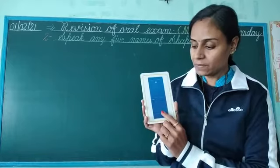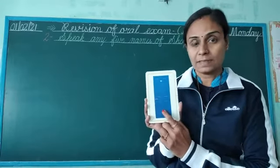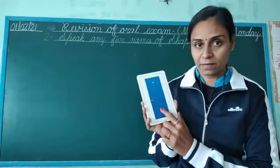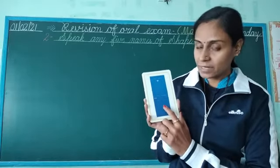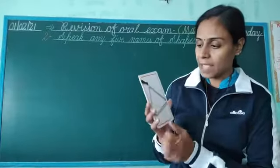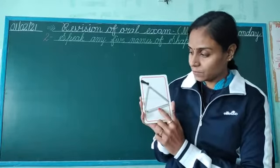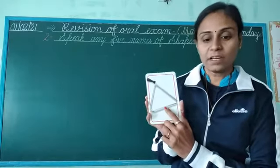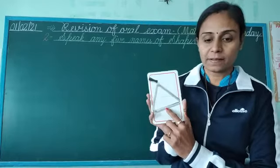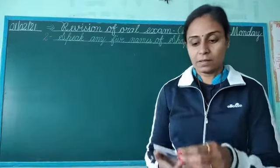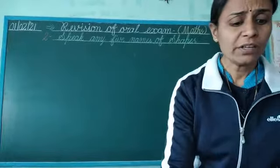Which shape is this? This is rectangle shape. Which shape is this? This is triangle shape. Now I show you on a chart.